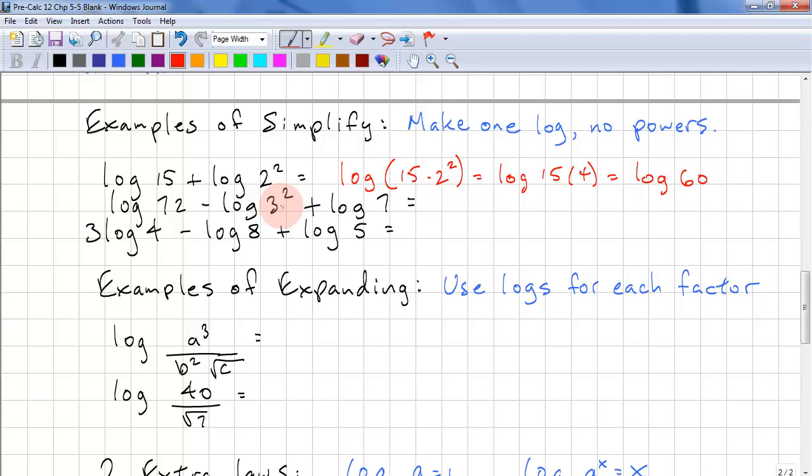Whenever you have powers inside your logs, just expand them. This is log 72 times 7 divided by 3 to the power of 2. When you have addition and subtraction, it's best to just put all the additions into the numerator, and then all the subtractions into the denominator. And this is log 72 times 7 divided by 9. Rather than multiplying 72 times 7, we're going to do mental arithmetic. We do 72 divided by 9, which is 8. And 8 times 7 is 56.